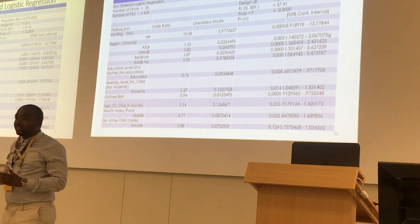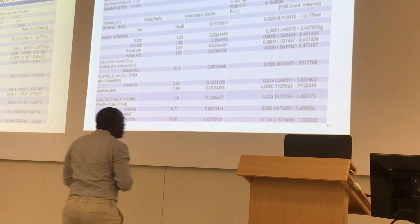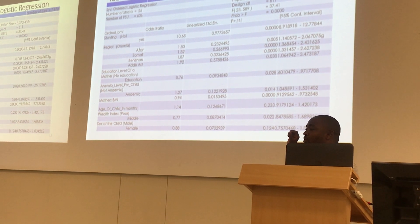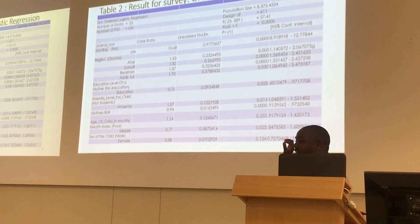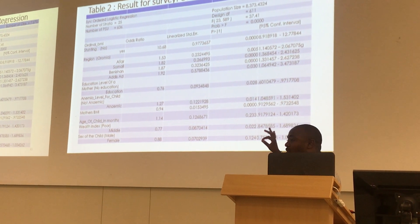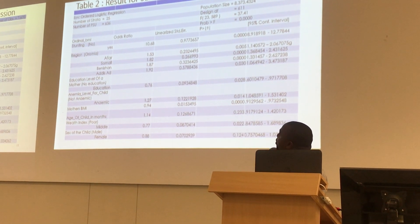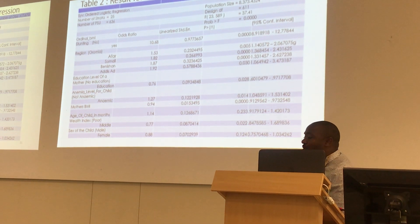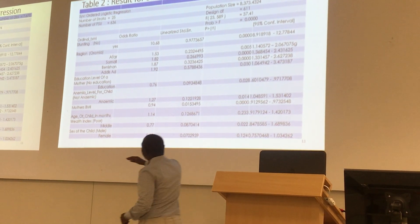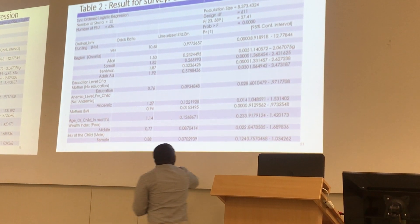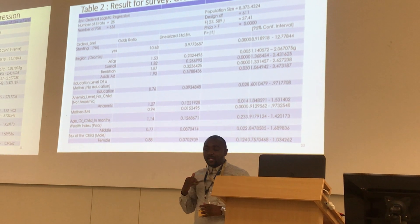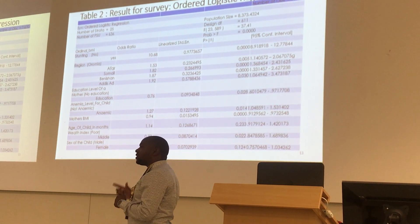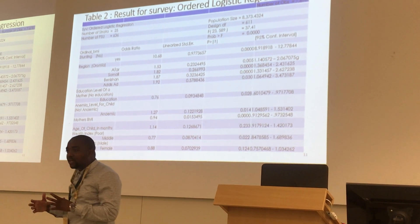So you say: every child in Ethiopia that is under 5 and stunted — their odds ratio is 10.68. The interpretation is the same throughout all covariates. Age of child was found to be non-significant, but I still included it in my results because it is known as a confounding variable.